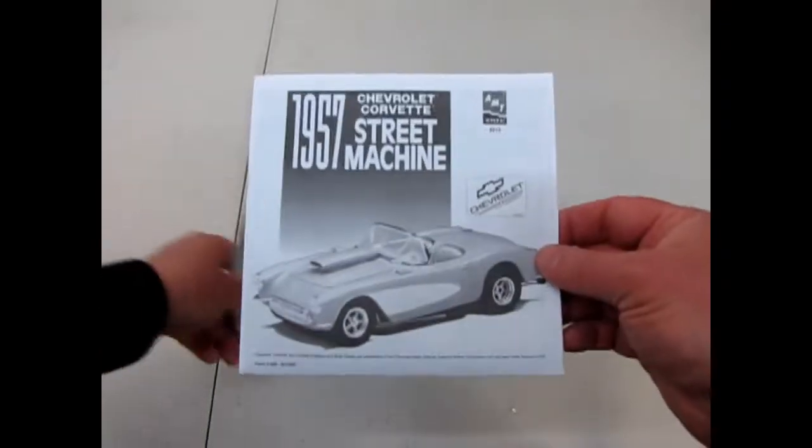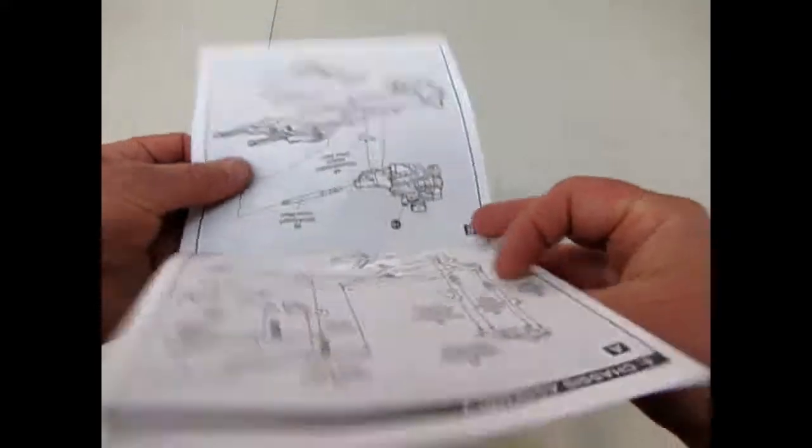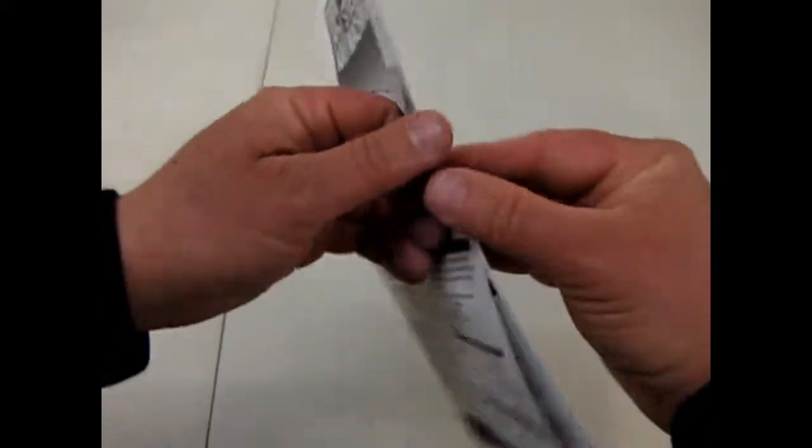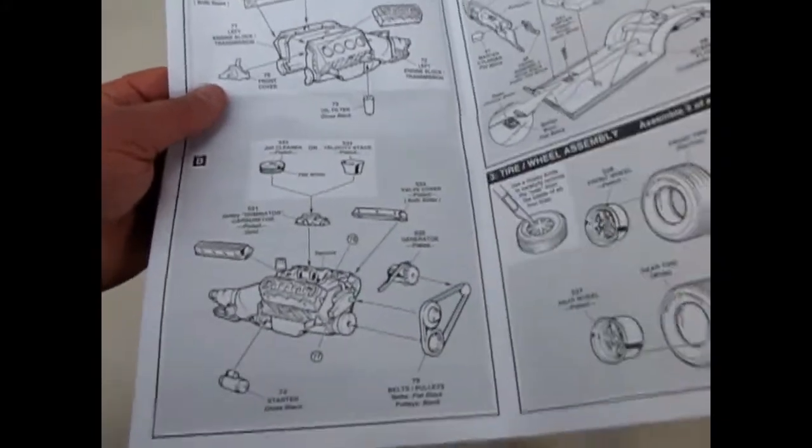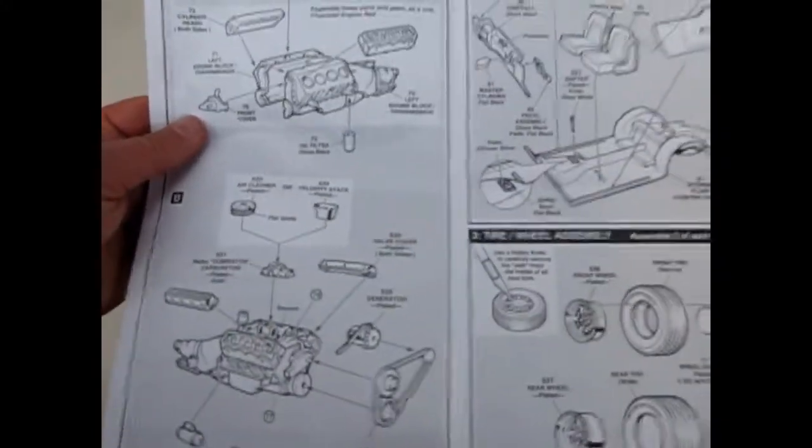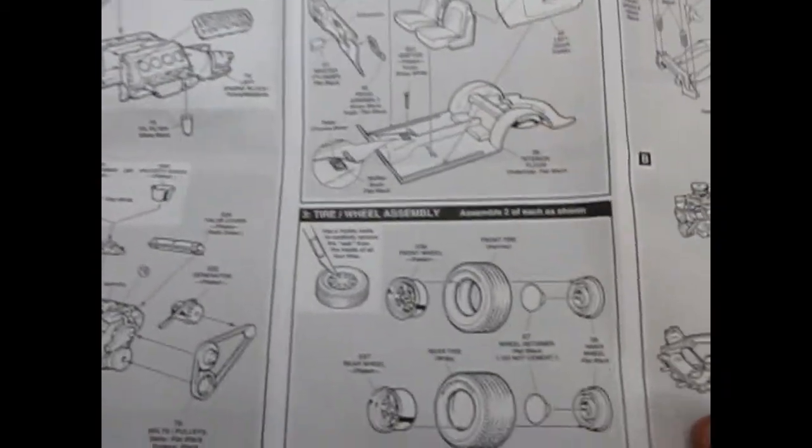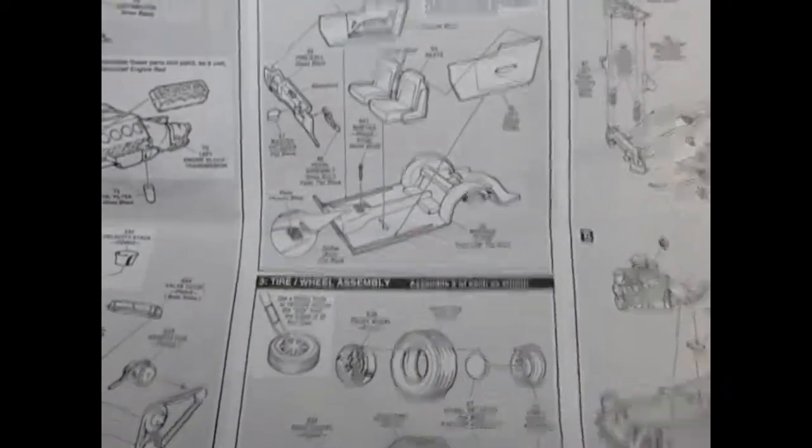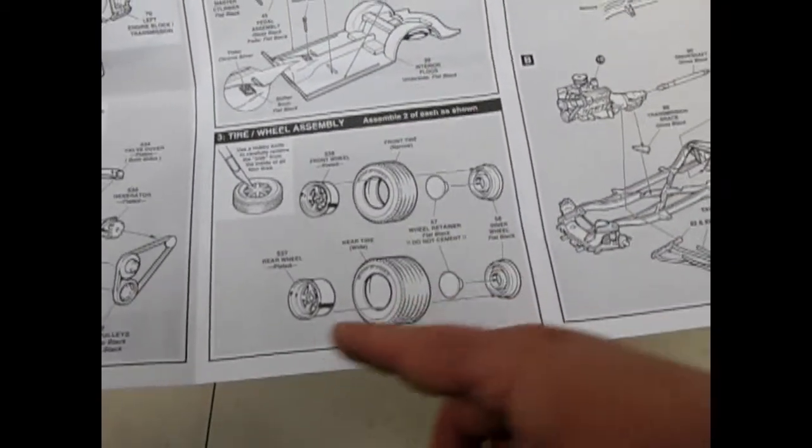Now to start with, we've got these great 57 street machine instructions which show this really awesome big block Chevy going together with a lot of detail, much like the Revell kits. Good stuff that gets covered over by valve covers. Then separate interior panels and these really wicked wheels.